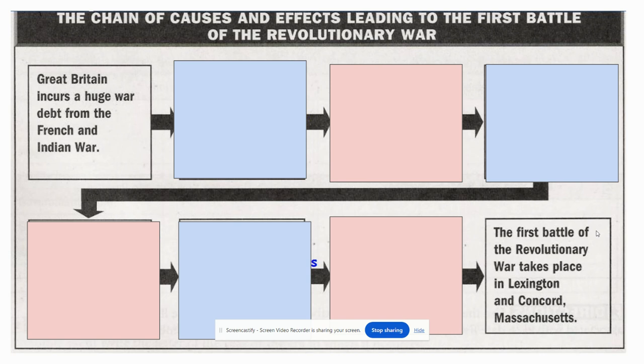Starting at the top on the left-hand side, there's information about the fact that Great Britain had incurred a huge debt from fighting the French and Indian War, which is sometimes known as the Seven Years War. It was kind of a world war before there were world wars. As a way to get the colonists more involved, the British Parliament decided that colonists living in North America needed to help pay for their protection, and thus charging them more in taxes was the way they were going to pay for the British Army.